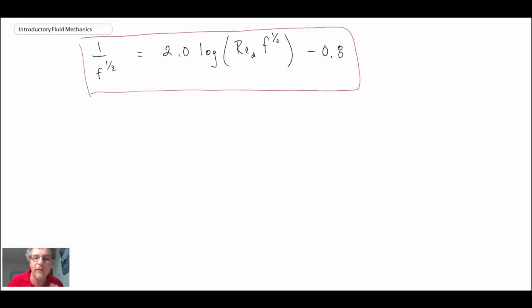We have this relationship here and this is good because we're getting something that has the friction factor in it, has the Reynolds number. It is a transcendental equation meaning that in order to solve it you have to iterate because the friction factor appears on both sides.